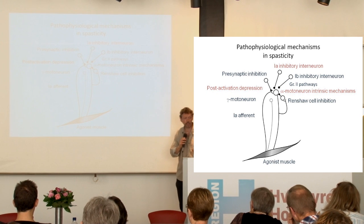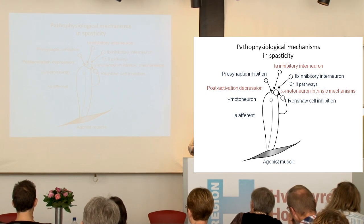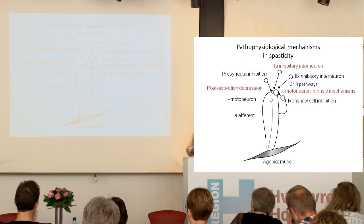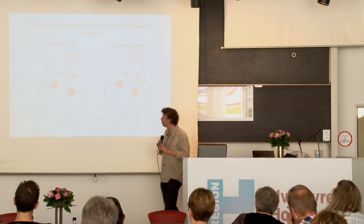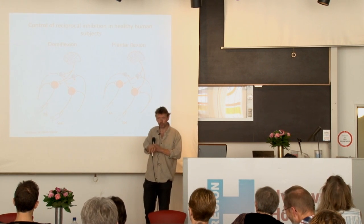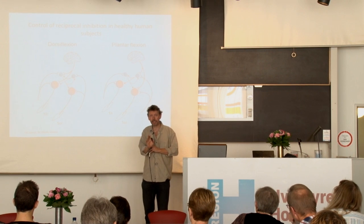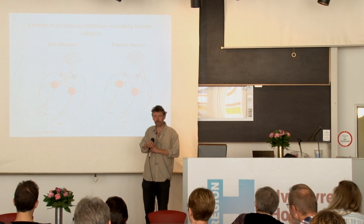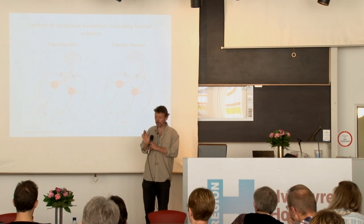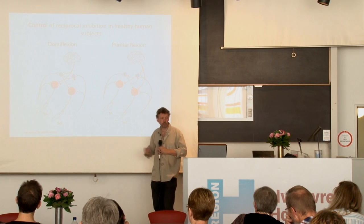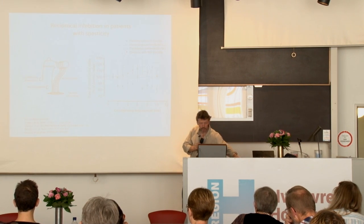I'm going to talk about reciprocal inhibition, which is basically the control of agonist and antagonist. I'm going to talk about the intrinsic mechanisms in the alpha motor neurons. And I'm going to talk about post-activation depression, which we think is really closely related to the pathophysiology of spasticity. First of all, reciprocal inhibition: the way it works normally is that whenever we want to make a contraction — say, an extension of my wrist — the spinal cord will make sure that the antagonists, the flexors, are being relaxed at the same time. Because if that wasn't the case, I would be evoking a stretch reflex whenever I do a wrist extension. We have reciprocal inhibition to ensure that.